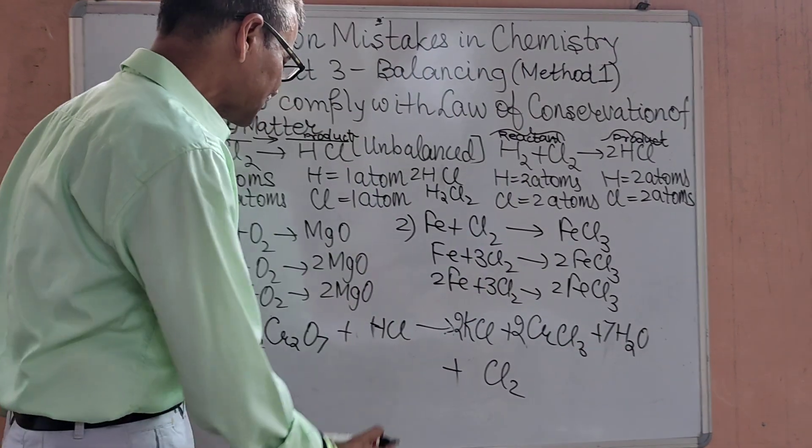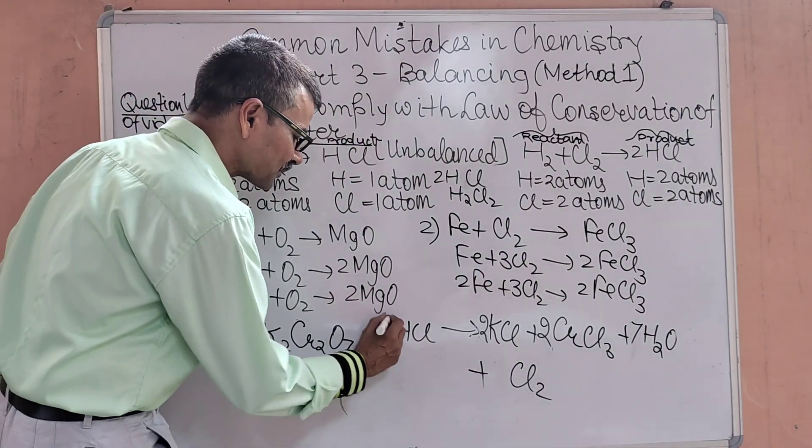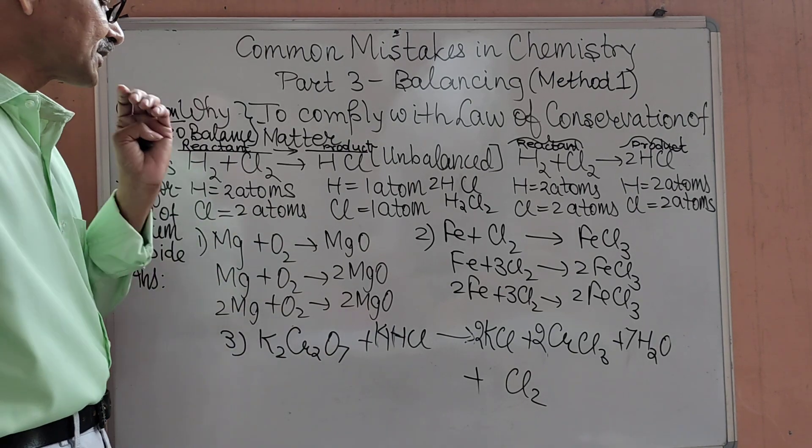Hydrogen 7×2=14 hydrogen here, here single. So we multiply here by 14 and our hydrogen is also balanced.